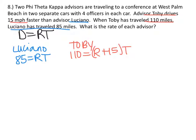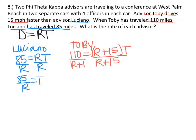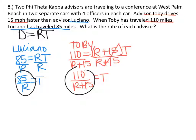So we're going to set each of these equal to T and then set those expressions equal to each other. For Luciano, we divide by R, giving us 85 divided by R equals T. For Toby, we divide by R plus 15, giving us 110 divided by R plus 15 equals T. Because they both equal T, they both equal each other.